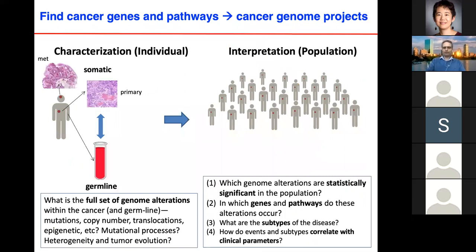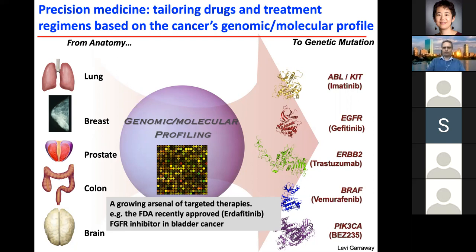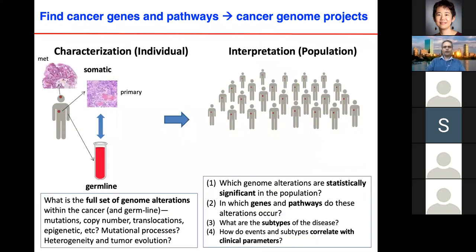For example, the FDA recently approved an FGFR inhibitor for bladder cancer. To understand the cancer genome, there are two major tasks. The first is characterization — understanding for an individual patient what happened from normal cells to the primary tumor to metastasis, by comparing germline DNA to somatic changes in the tumor. The second is interpretation — taking characterization data across a cohort of patients to identify which genes, genomic regions, or pathways are altered more than expected by chance, to distinguish drivers from passengers, identify disease subtypes, and associate with clinical parameters.